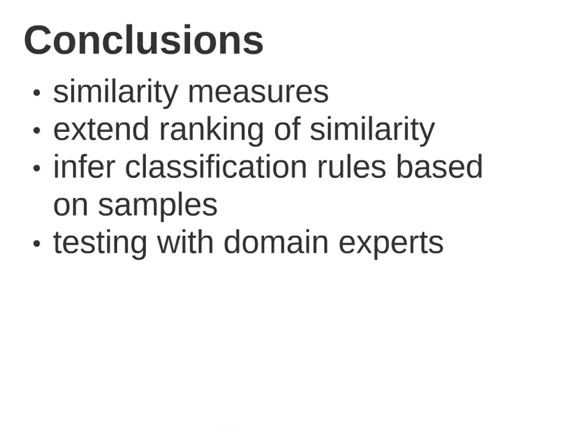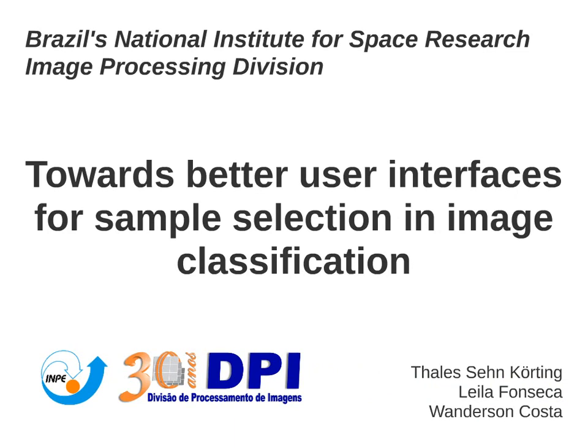To conclude the work, we still have to improve the similarity measures, because we have lots of segments and have to treat them individually, and computing similarity measures is a costly task. We have to extend the ranking shown. Maybe we can infer classification rules based on the samples — for example, if we have lots of vegetation samples, an algorithm could estimate that features such as NDVI would be high for all vegetation samples. We can show these rules to the user to help them make decisions. We also need to test with more domain experts to get feedback. This is our work towards better user interfaces for sample selection in image classification. Thank you very much.